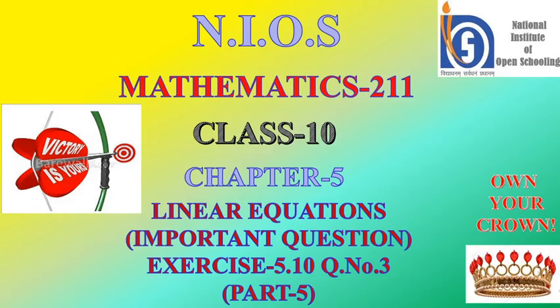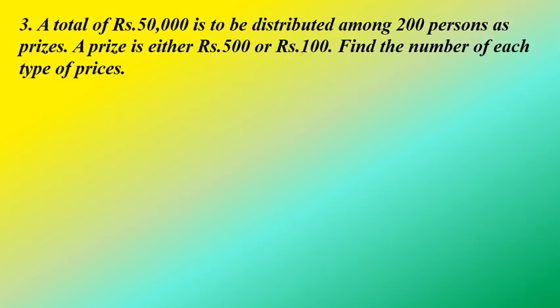Hello everyone. Today we will learn an important question from chapter number 5, linear equations, exercise 5.10, question number 3. It is given that a total of rupees 50,000 is to be distributed among 200 persons as prizes. A prize is either rupees 500 or rupees 100. Find the number of each type of prize.